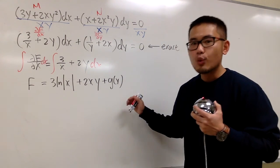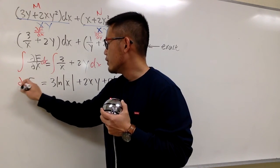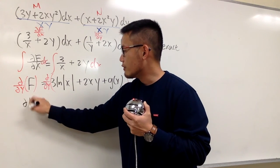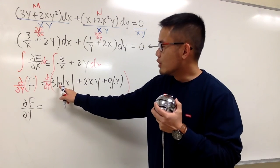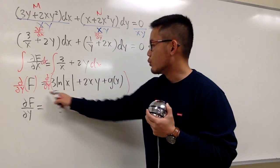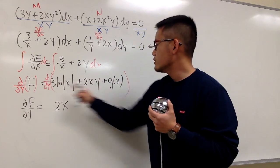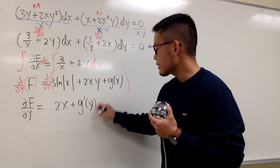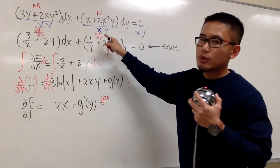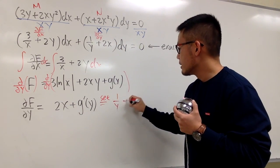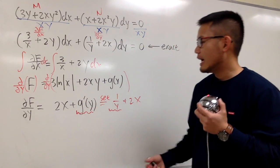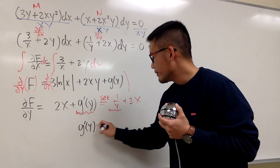Now I differentiate F with respect to y on both sides. On the left we get F_y. On the right: the derivative of 3 ln|x| with respect to y is 0 since it's a constant in y, the derivative of 2xy gives 2x, and differentiating g(y) gives g'(y). I set this equal to what we have for F_y, which is 1/y + 2x. The 2x terms match, so g'(y) must equal 1/y.